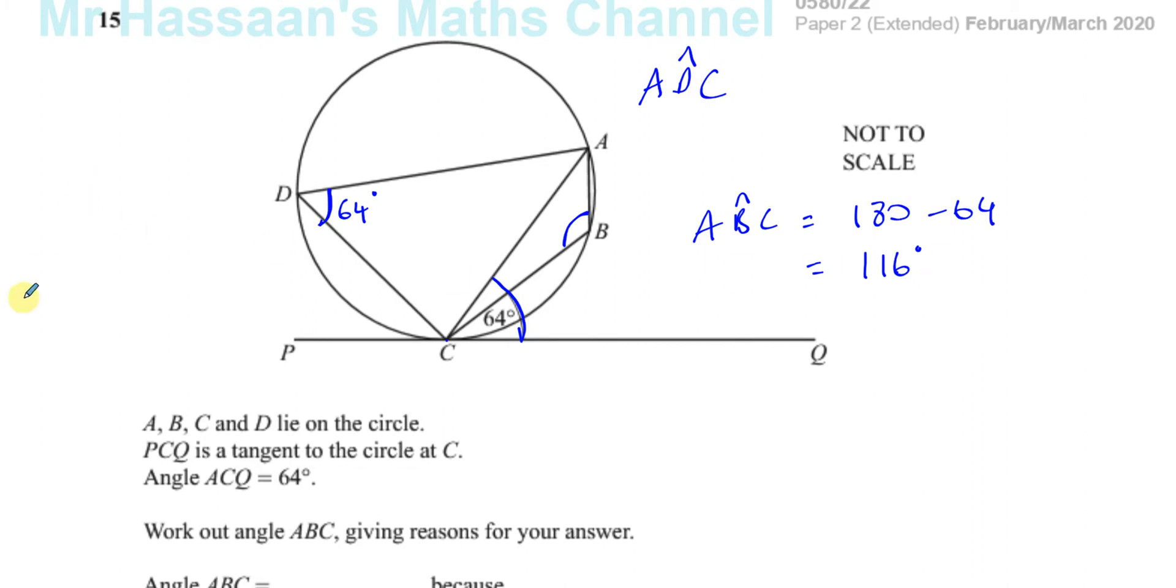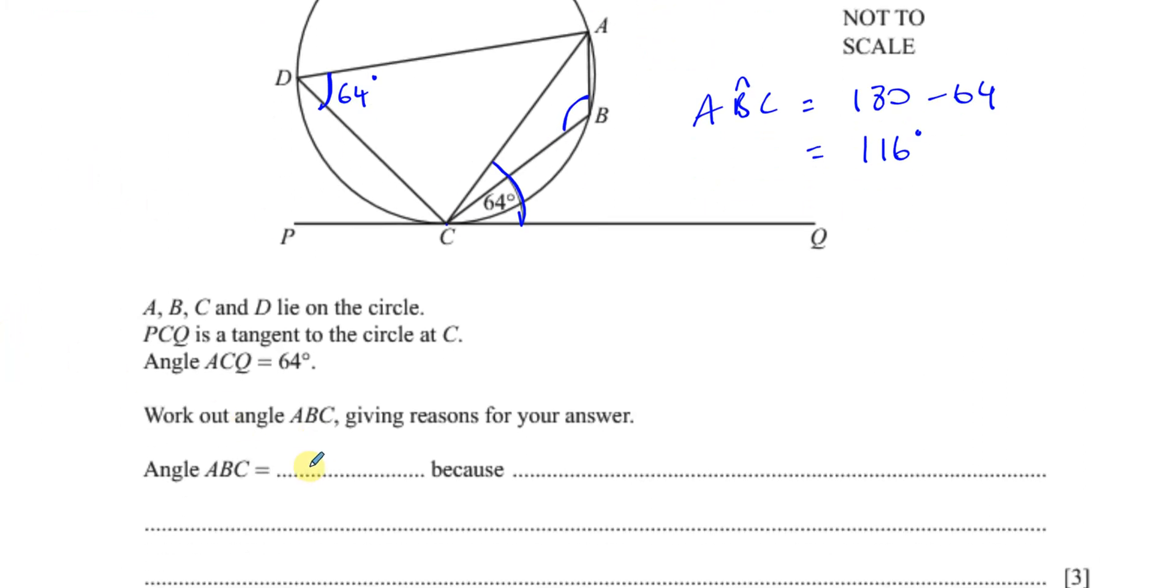So that's the answer to the question. Now, they're asking for us to give reasons, and I kind of went through those reasons. So you can say because angle ADC is equal to angle BCQ, which is equal to 64, and the reason being the alternate segment theorem.